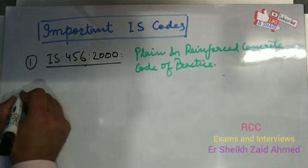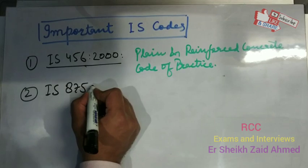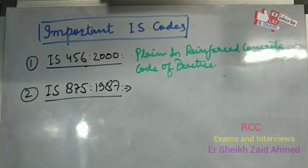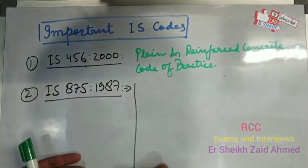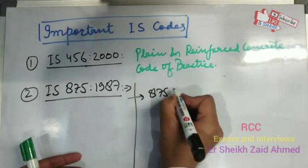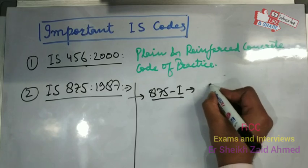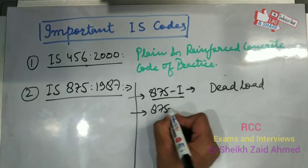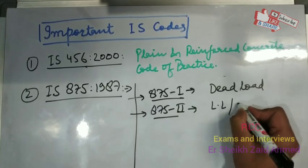The second one is IS-875-1987. IS-875 is regarding the code of practice for design loads. It has five parts. IS-875 Part 1 is regarding dead load. IS-875 Part 2 is regarding live loads or imposed loads.